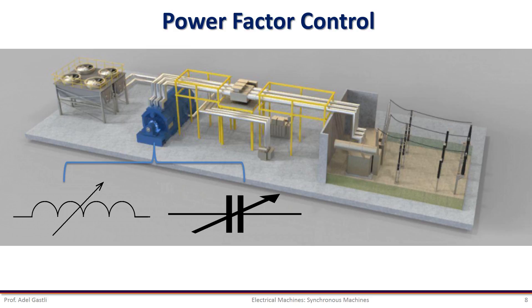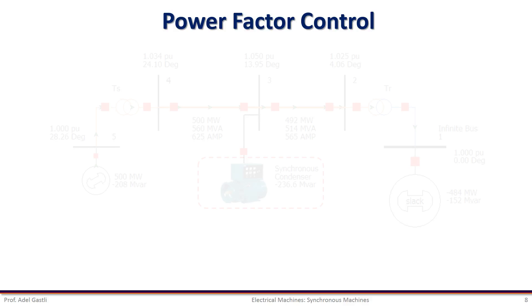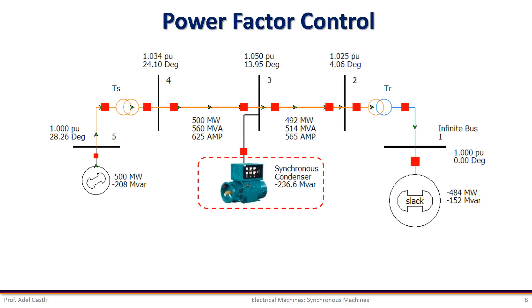Looking from the machine terminus, the machine behaves as a variable inductor or variable capacitor as the field current is changed. An unloaded synchronous machine is therefore called a synchronous condenser and may be used to regulate the receiving end voltage of a long power transmission line.